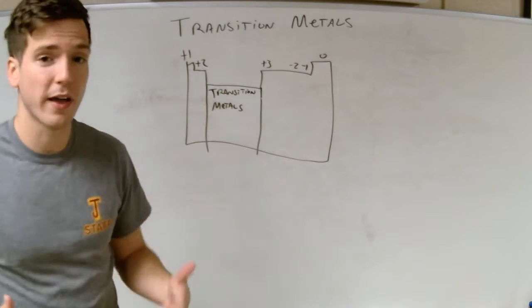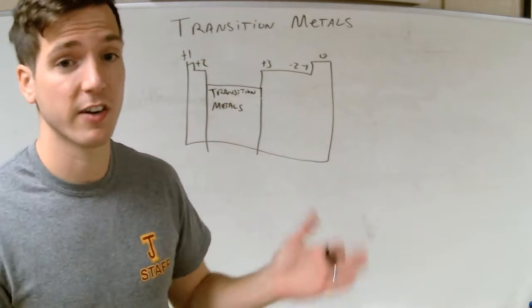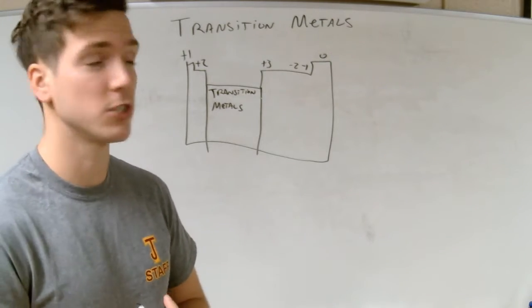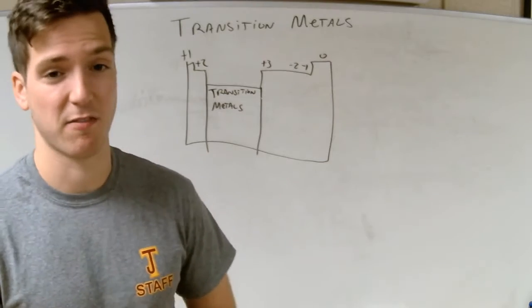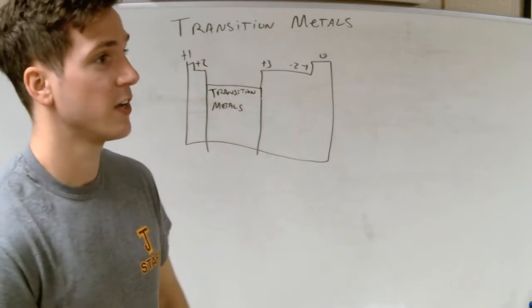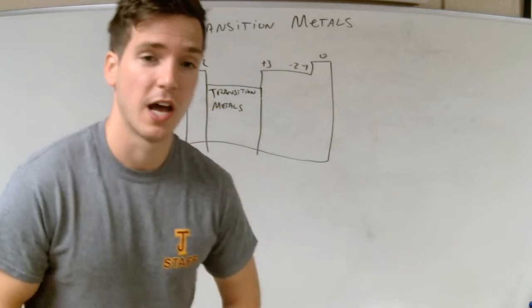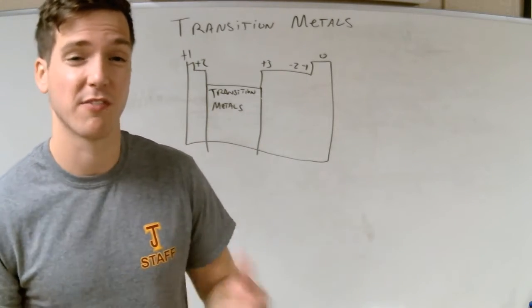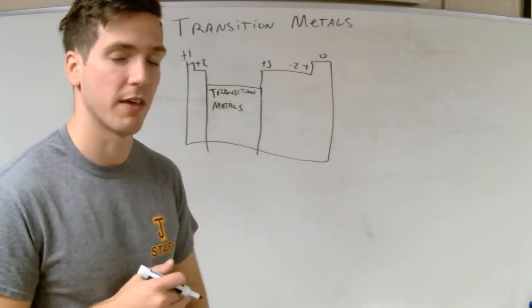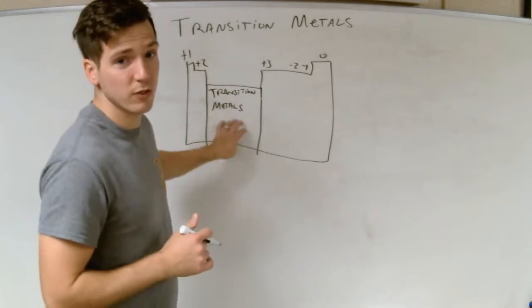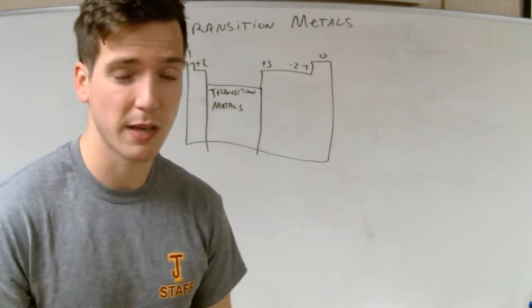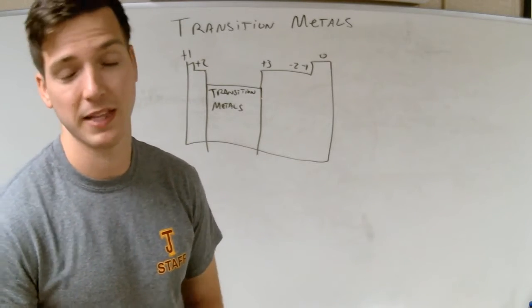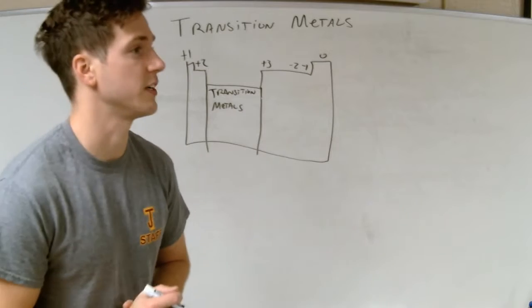Transition metals don't have fixed charges — they have varying charges. Iron can have a plus 2 or plus 1 charge. Manganese can have a plus 2 or plus 4 charge. They can vary a bunch. So we've got to deal with compounds that have those transition metals and figure out how to name them and how to give them formulas. Among transition metals, there are two exceptions — two elements that have a fixed charge all the time, based on their electron configuration.